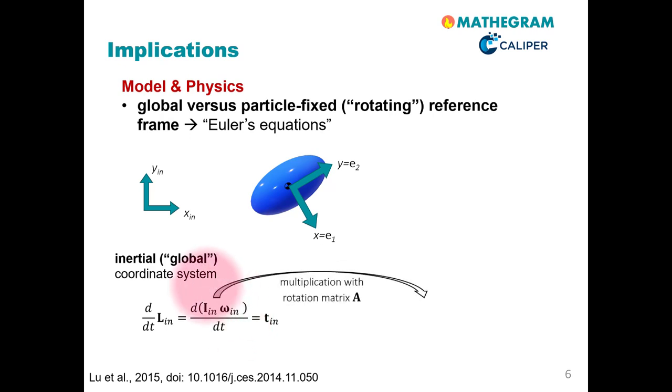You see that the main problem is that here this moment of inertia tensor is in this time derivative. The problem is specifically that this moment of inertia tensor in the global system is time-variant, so it changes with time. In short, we cannot directly evaluate this equation.